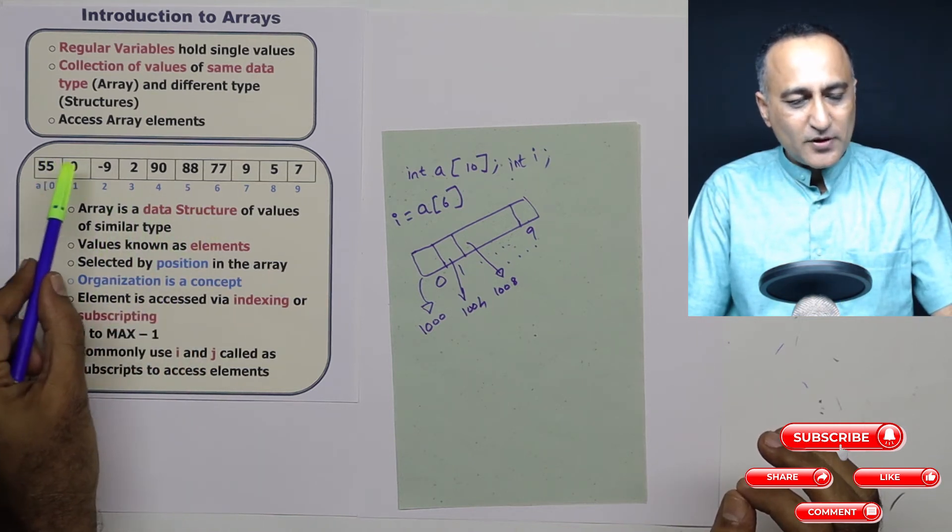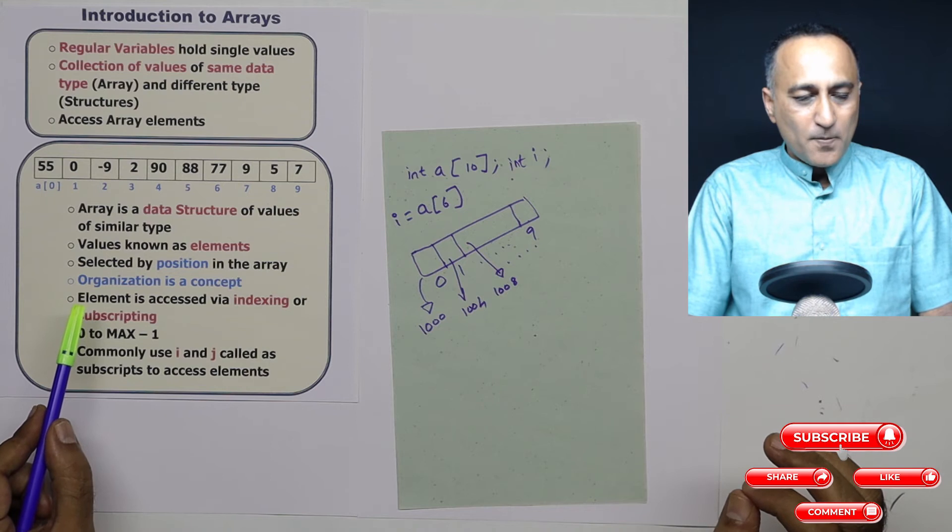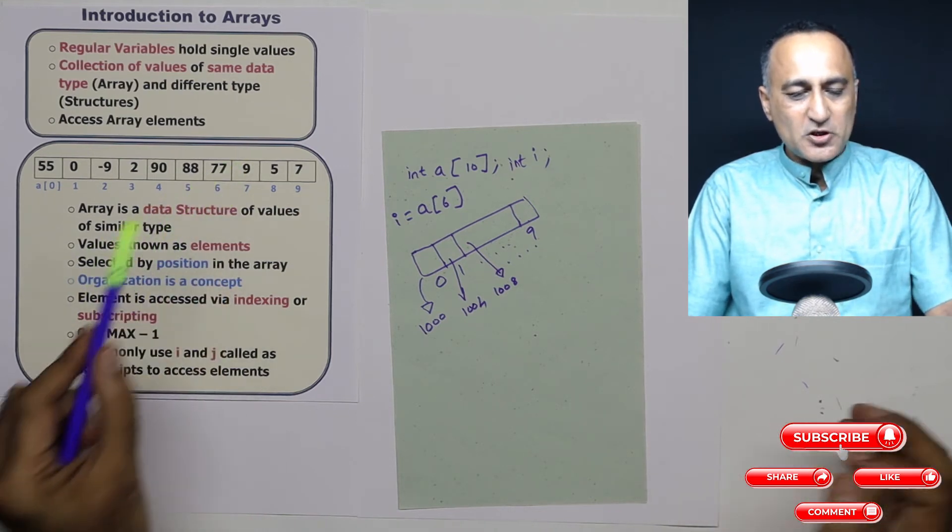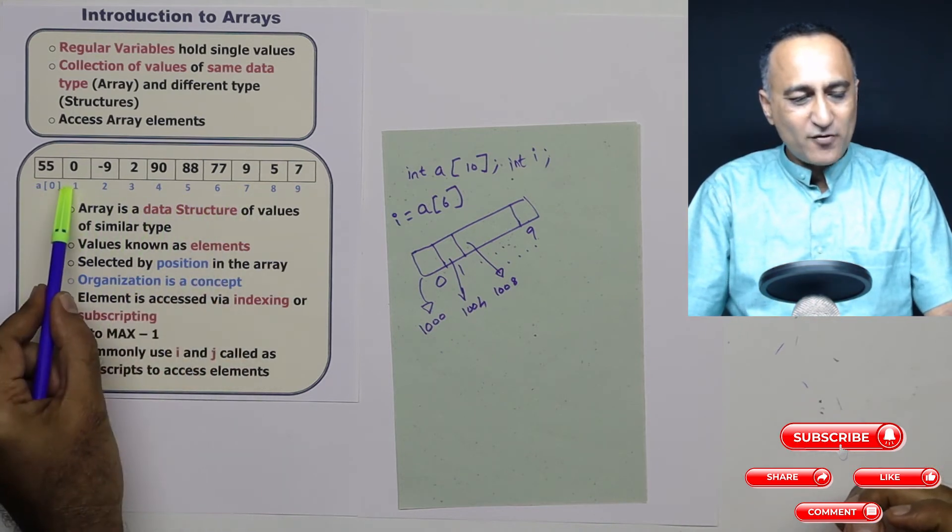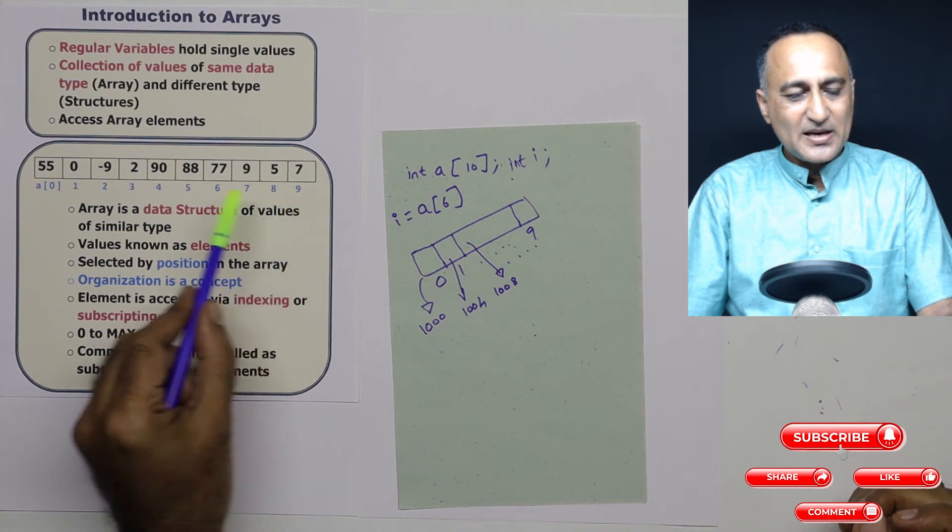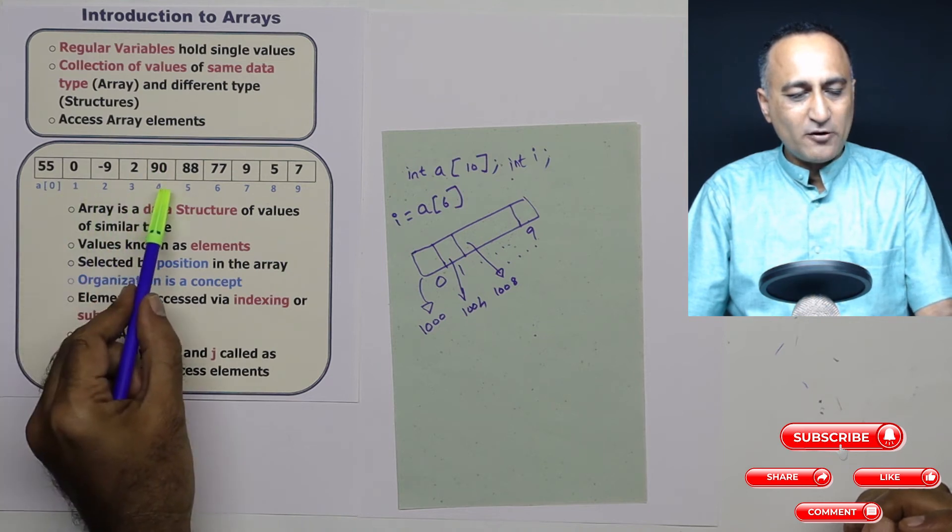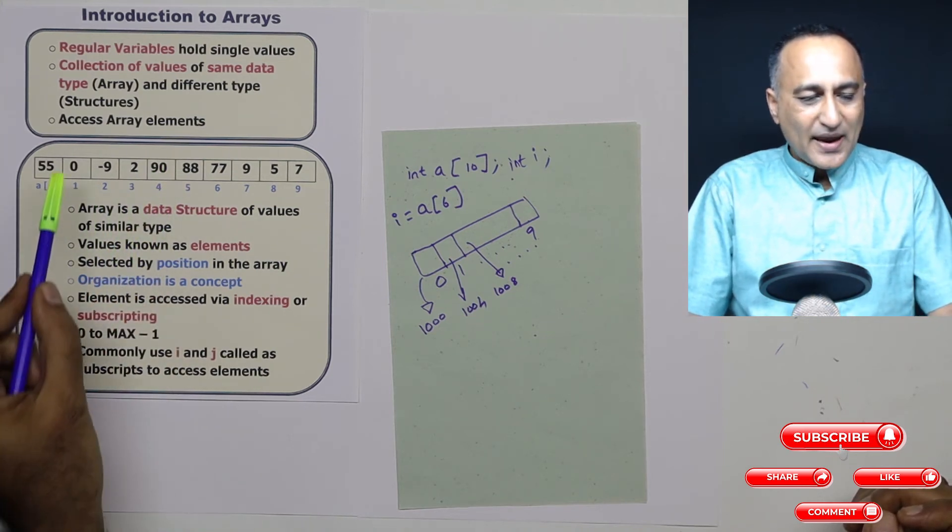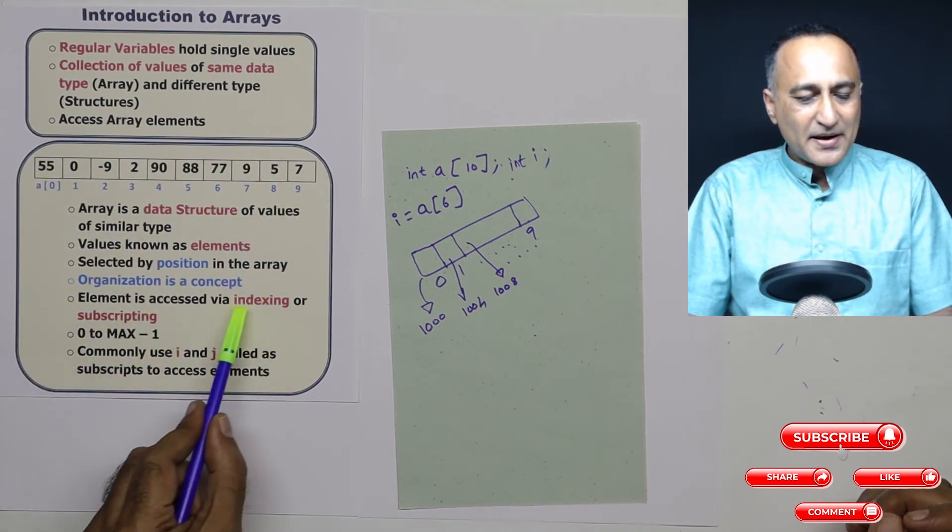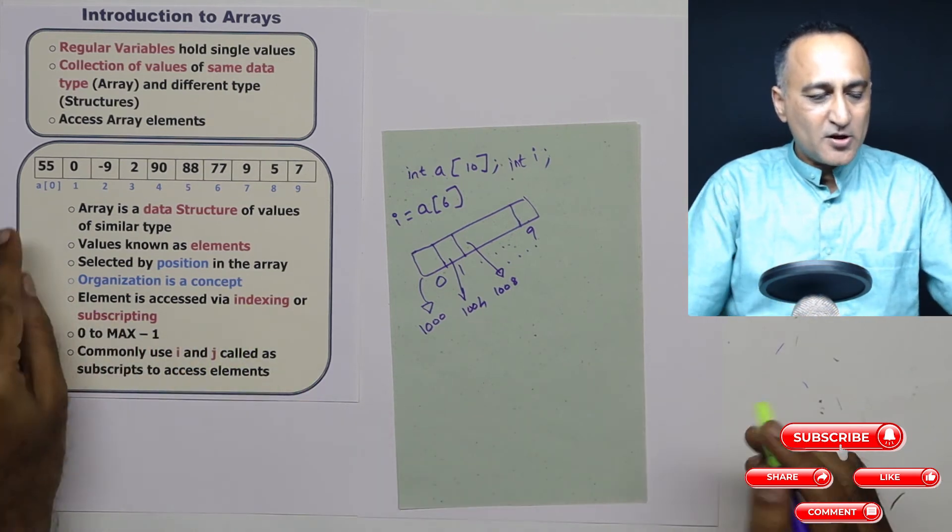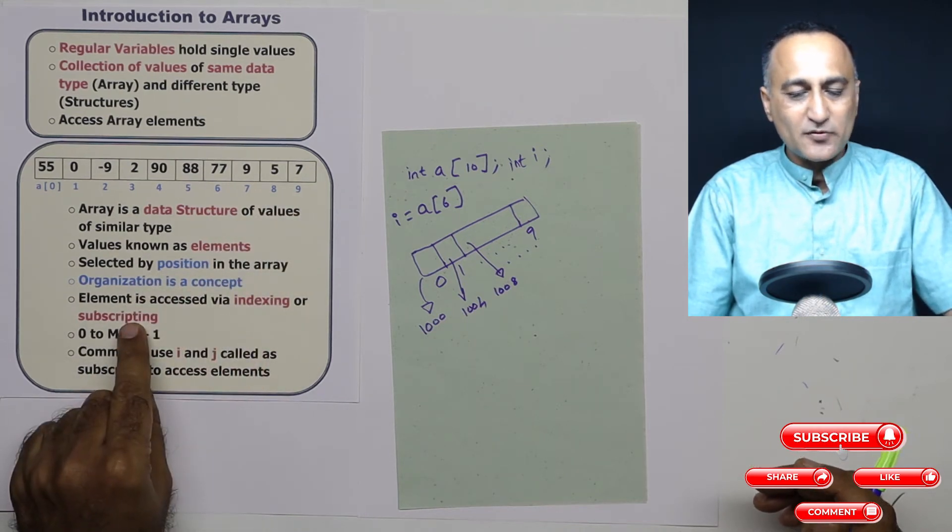Now all these values 55 minus 9, 2, 90 these are known as elements of an array. The element is referred to by its position, the element nine is referred to by the position A of seven. Each of the number, number nine for example, is referred by A of seven, 90 is referred by say A of four and so on. Now we access all of these individual elements or numbers of an array by the means of an index or a subscript. So this 0, 1, 2, 3, all the way till 9 are known as index or subscript of the array.